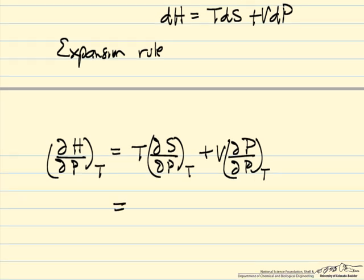T times the partial of S with respect to P at constant T plus V times 1, since the partial of P with respect to P is 1.